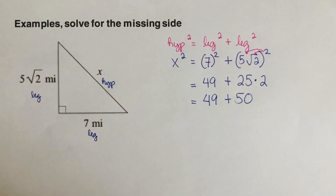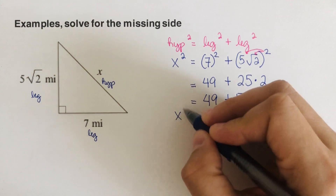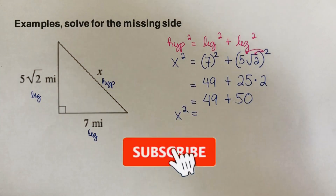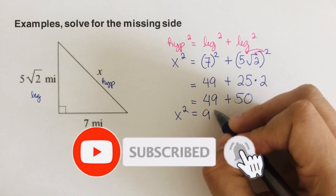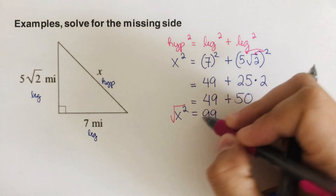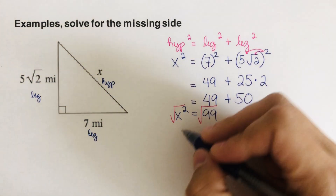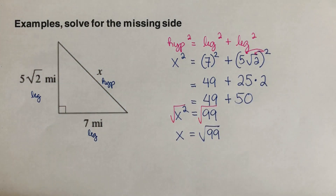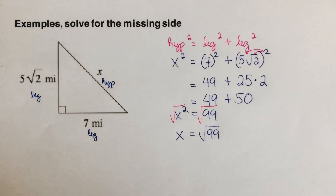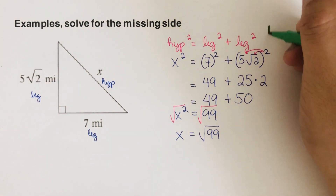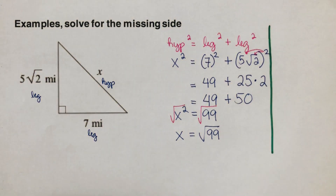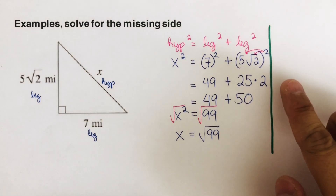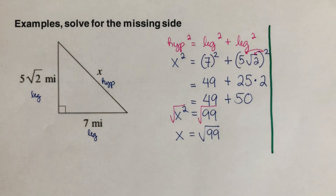So we get 49 plus 50, which means x squared equals 99. To solve for x, we take the square root of both sides, giving us x equals the square root of 99. Now we need to simplify this radical. There is another video on how to simplify radicals using the factor tree — I'll show it here and put the link in the description below.